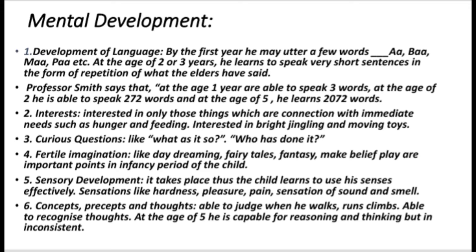In order to satisfy his instincts and tendencies, the child roams in the imaginary world. At this stage, it is necessary to give recognition to the child's imagination. Fifth, sensory development: in the first months, sensory development takes place and the child learns to use his senses effectively. He experiences many types of sensations like hardness, pleasure, pain, sound, and smell, and can compare various sensations. Sixth, development of concepts and percepts begins at this stage; he is able to judge distances when running, walking, and climbing, and can make simple generalizations, though all are rudimentary.